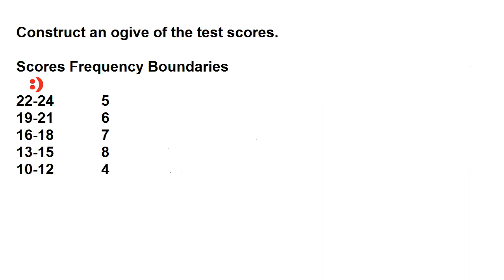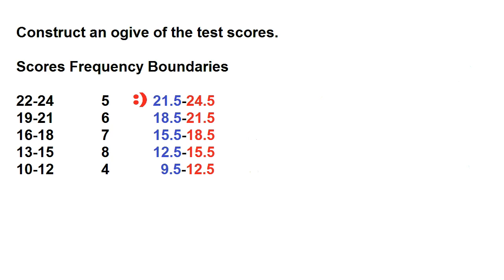For scores 22 to 24, the lower limit is 22 and the upper limit is 24. Subtract 0.5 from 22 and add 0.5 to 24. The class boundaries are 21.5 to 24.5, 18.5 to 21.5, 15.5 to 18.5, 12.5 to 15.5, and 9.5 to 12.5.